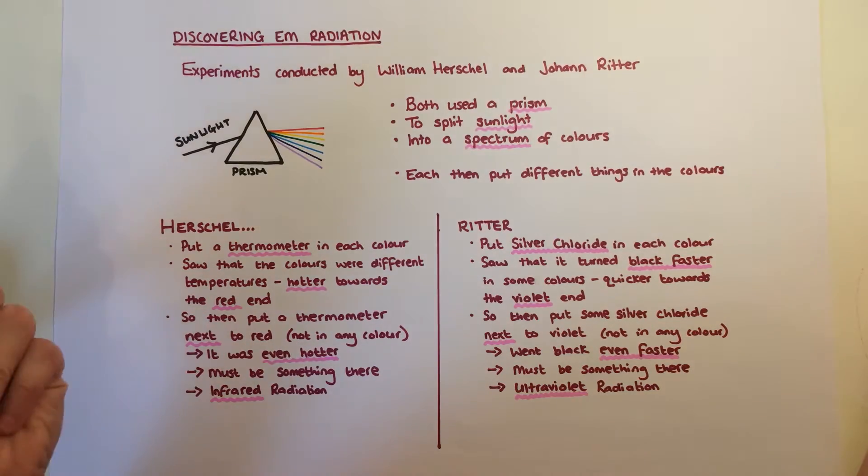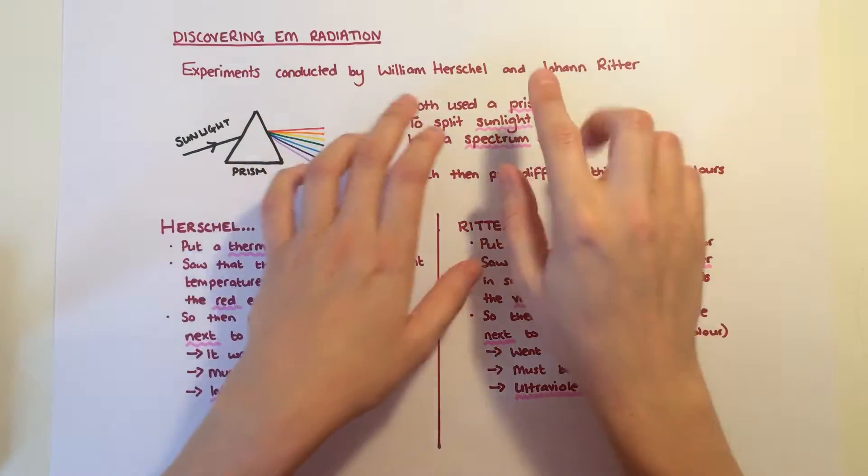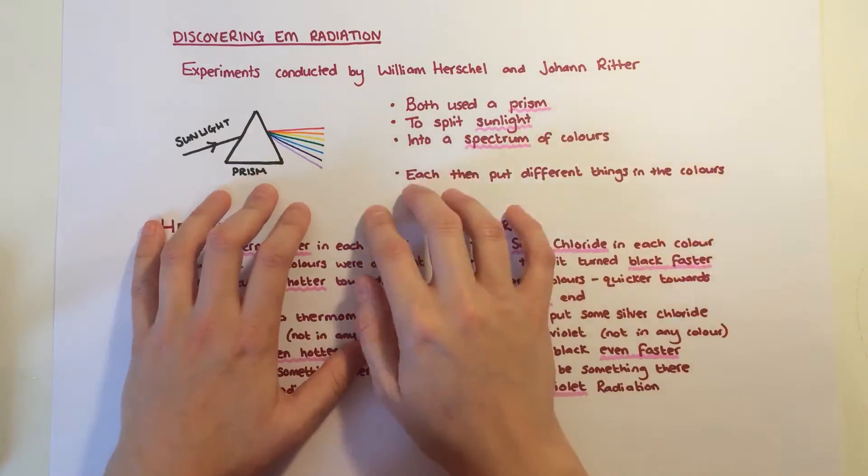How exactly were some of these parts of the electromagnetic spectrum discovered? Well, two parts were discovered by men called William Herschel and Johann Ritter. They did a very similar experiment.